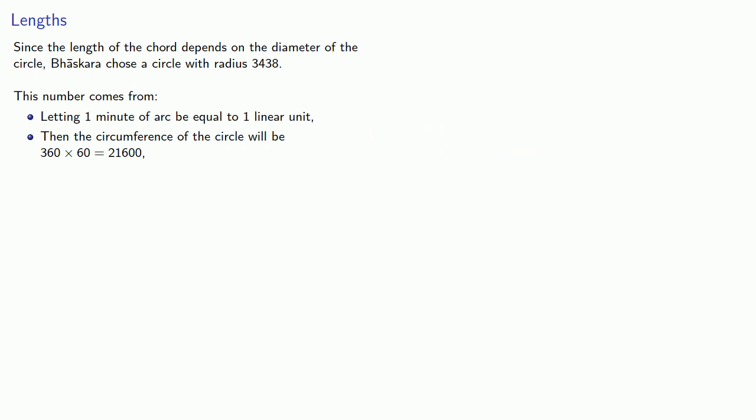And if our circumference is 21,600, the diameter will be approximately 6,876. So the radius will be half the diameter, 3438.